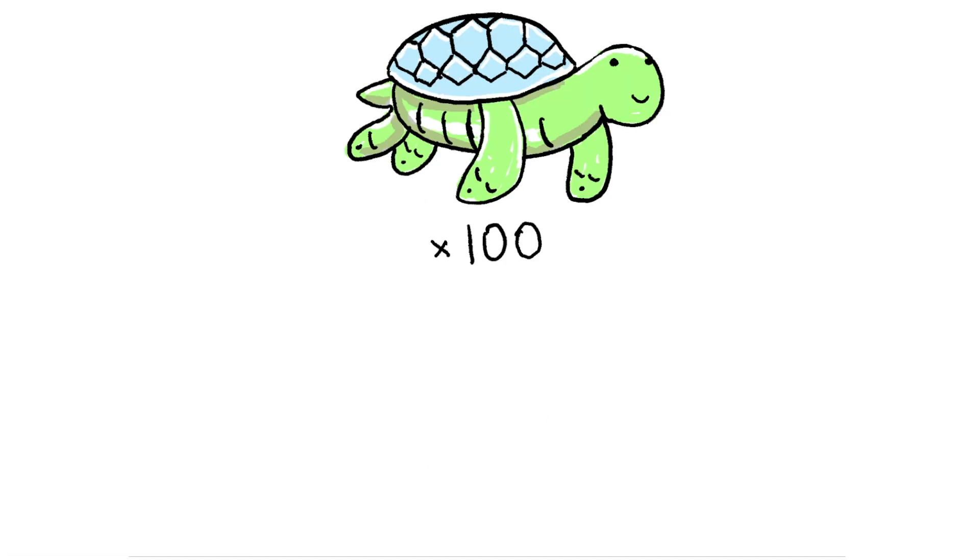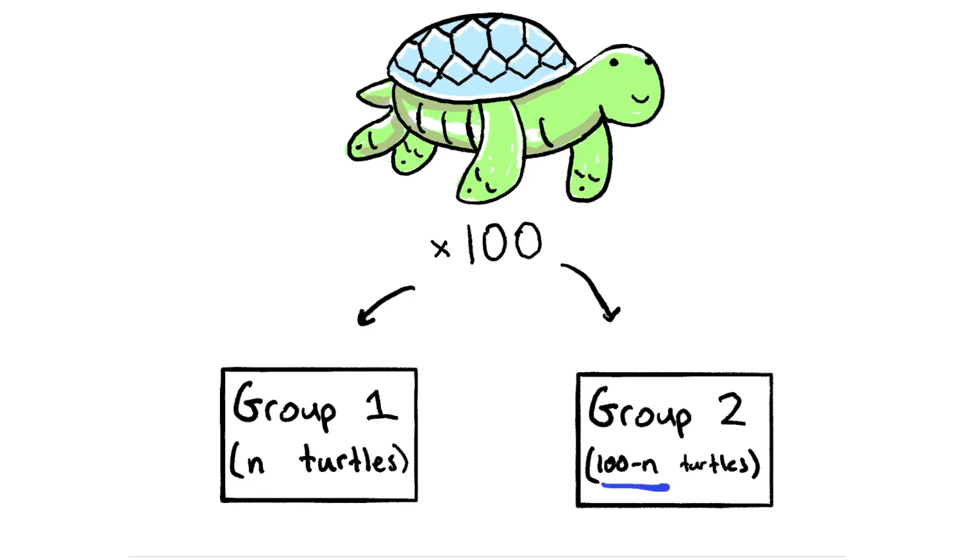So to start, before we do any flipping, let's split our 100 turtles into two groups. Group 1 will have n turtles, and that means group 2 will have 100 minus n turtles.